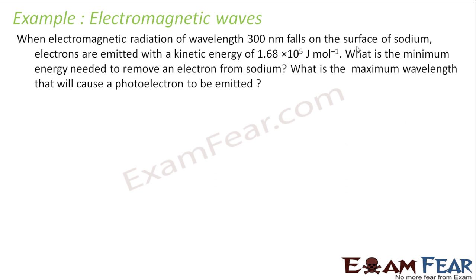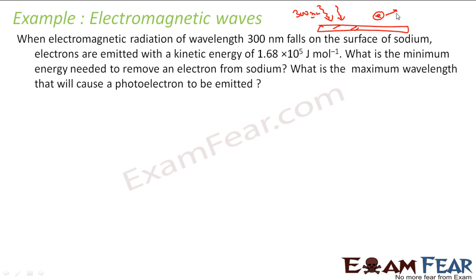The question says: when an electromagnetic radiation of wavelength 300 nm falls on a surface of sodium, electrons come out with a kinetic energy of 1.68 × 10⁵ joule per mole. Please note this is joule per mole. What is the energy required to remove an electron from sodium?